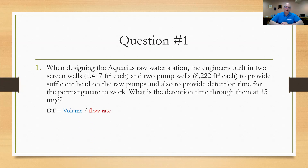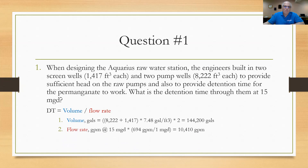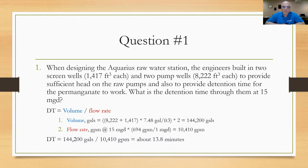This is a detention time problem: detention time equals volume divided by flow rate. First, I added the two volumes — 1,475 and 8,222 cubic feet each — converted to gallons by multiplying by 7.48, and multiplied by two for the two parallel sides, getting about 144,200 gallons. The flow rate of 15 MGD converts to 10,410 gallons per minute by multiplying by 694 GPM per MGD. Dividing 144,200 by 10,410 gives approximately 13.8 minutes detention time.